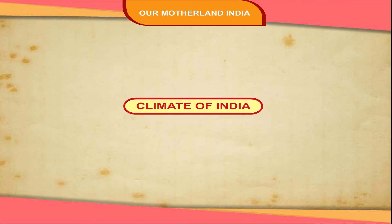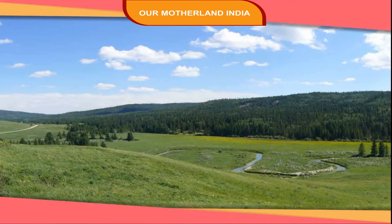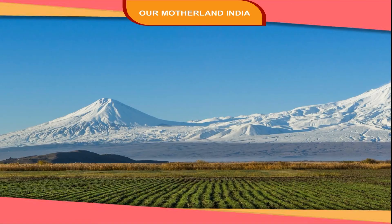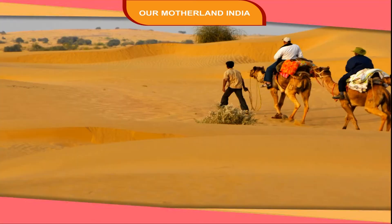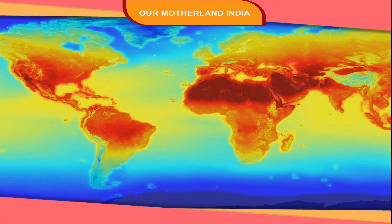Climate of India. India has different types of landforms like mountains, hills, valleys, plains, plateaus, deserts, coastlines etc. These physical features determine the climate of a place. So the climate in our country varies from place to place.